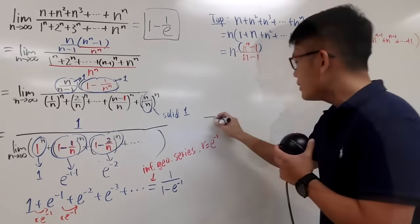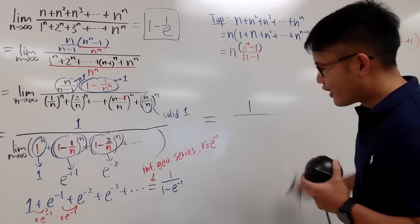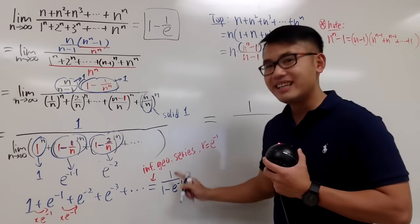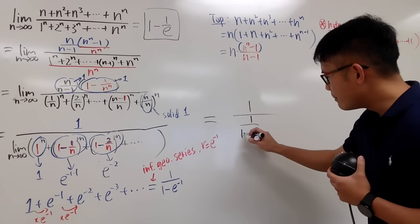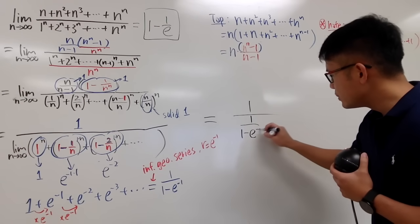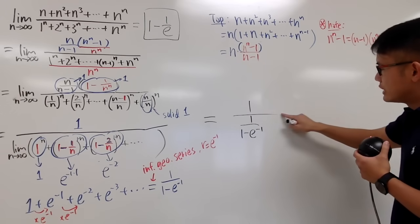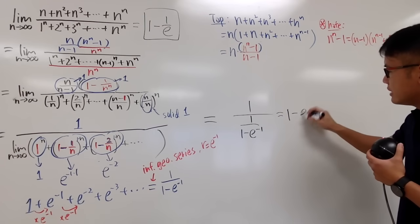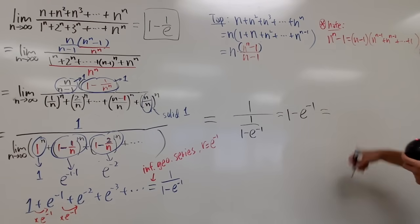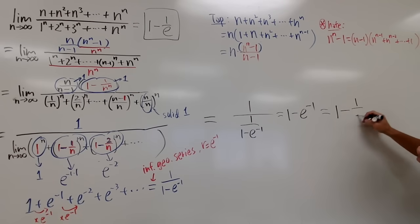That's pretty much it. All in all, we have 1 on the top over this on the denominator. So I will just write down 1 over (1 minus e to the negative 1). And of course, we can just take the reciprocal, and we get 1 minus e to the negative 1. And you can write this down as 1 minus 1 over e.